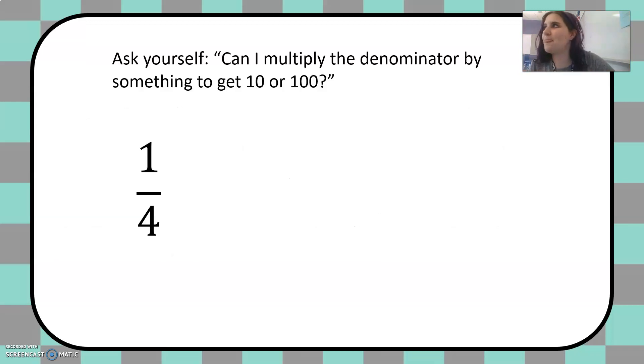Let me show you an example. When you see a fraction like one-fourth, ask yourself: Can I multiply the denominator by something to get 10 or 100 since we know how to do those really well? So here I have one-fourth and in my head I'm thinking what can I multiply four by to get 10 or 100.